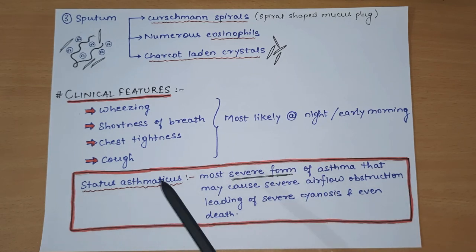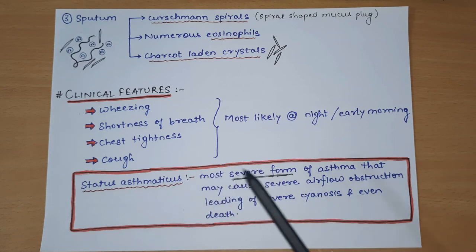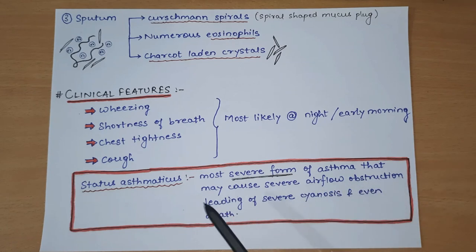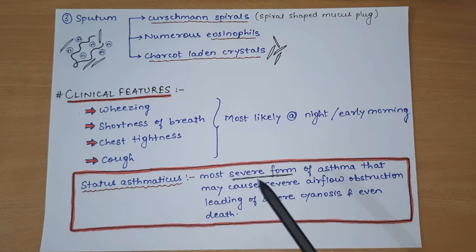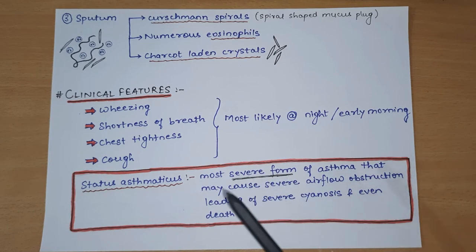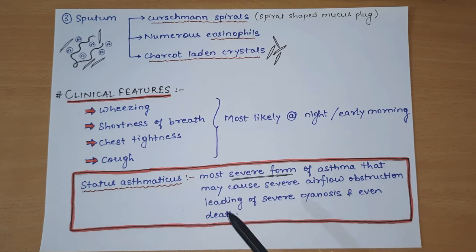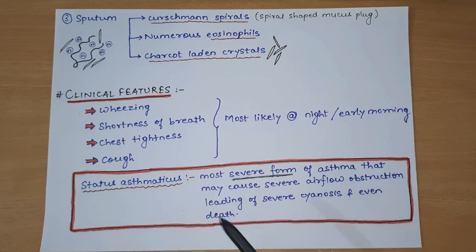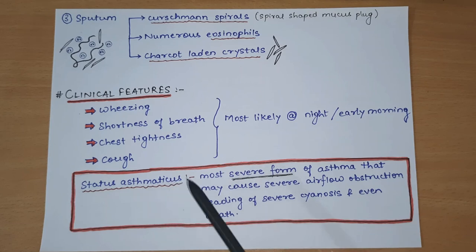One other important term is status asthmaticus - this is the most severe form of asthma. So these were the clinical features of asthma.